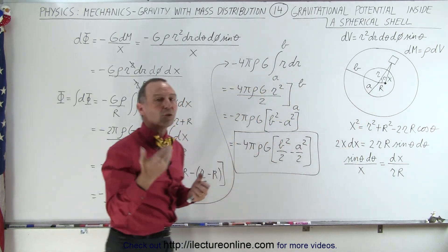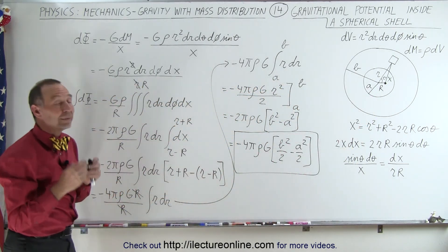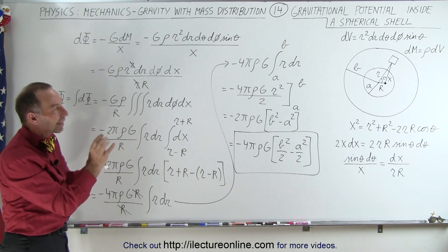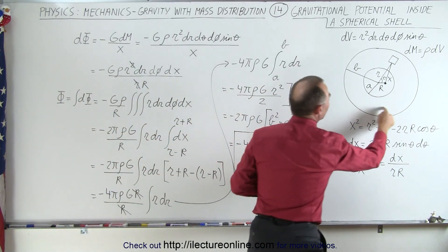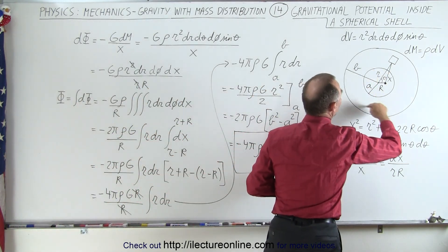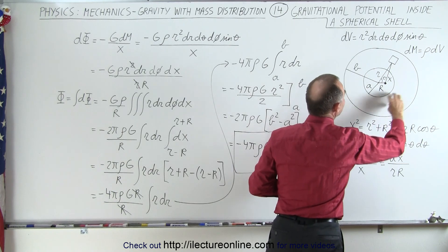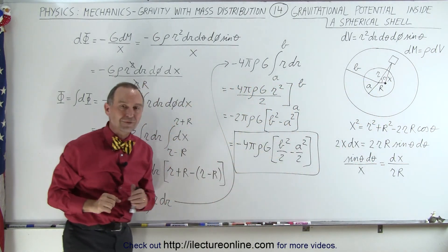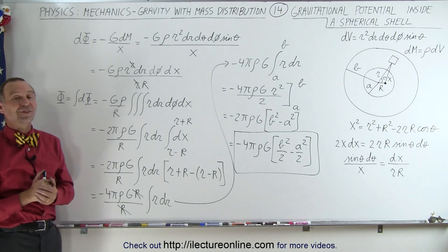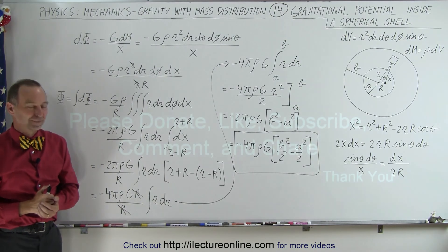Outside the cavity, it varies as 1 over r. And so now next we're going to take a look and see what it's like inside this region right here. What happens to the gravitational potential when we're inside this region? So that would be our next video. And that's how it's done. Thank you.